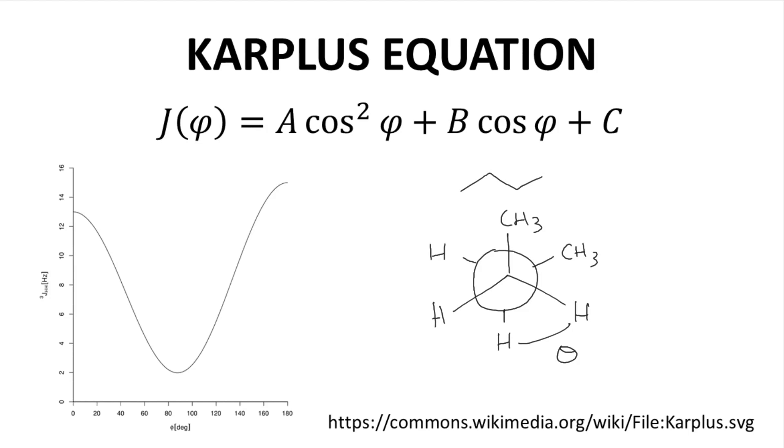In practice, the value that we observe in an NMR spectrum is an average from all the conformations. A typical J value for split hydrogens on an alkyl group is 7 to 8 Hz. Let's see an example.